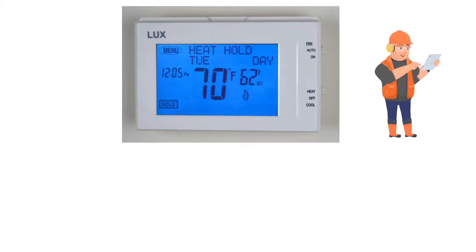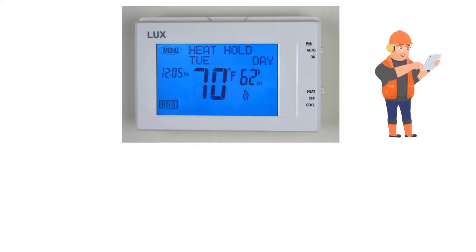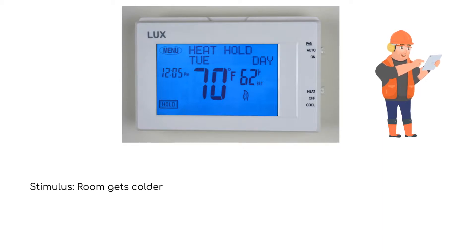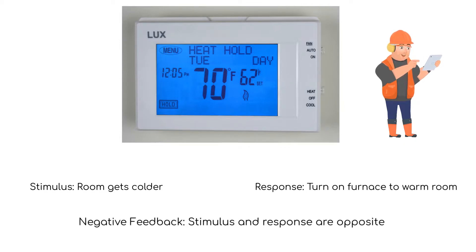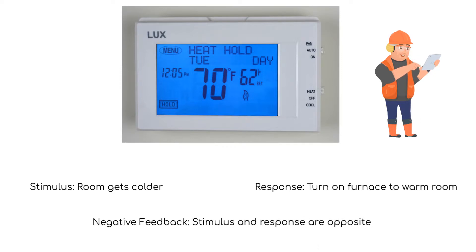Now let's say we still have our thermostat set at 70 degrees, but this time it's winter and we open the window. The temperature in the room begins to lower until it gets lower than 70 degrees. The system now responds by turning on the furnace. The room gets warmer until the temperature gets above 70 degrees. The stimulus is the room getting colder. The response is to turn on the furnace to warm the room up. Can you see that the stimulus and response are still opposite? So this is still an example of negative feedback.